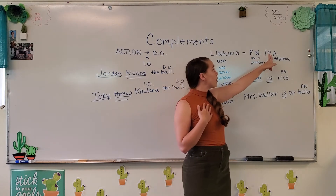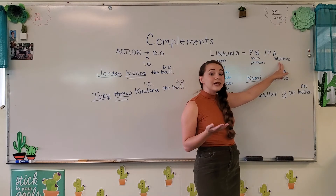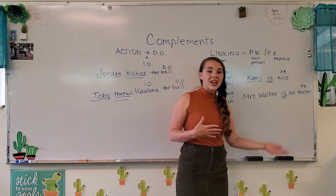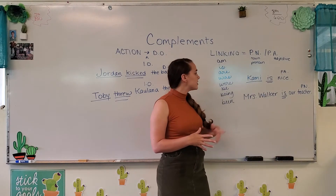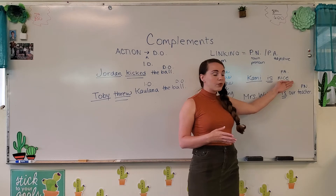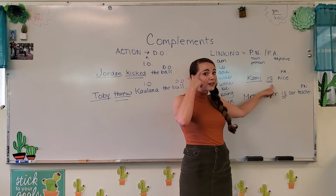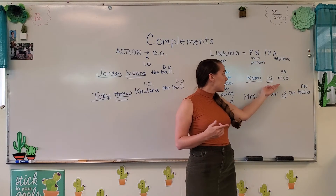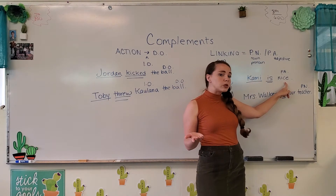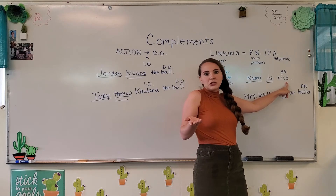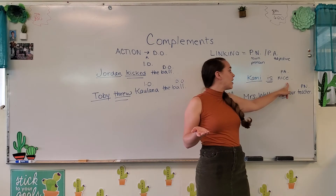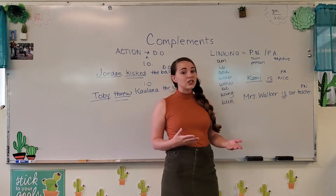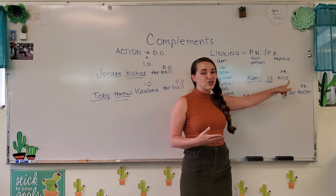A predicate adjective describes the subject — it tells you something about the subject. A predicate nominative kind of names the subject. Let's look at this: Cammie is nice. We see is, so we automatically know that's a linking verb. Cammie is — and then nice just describes her, it tells me something that describes her, that's an adjective. Nice isn't a person, nice isn't a place, nice isn't a thing. So that's why we call that a predicate adjective — it comes after a linking verb.